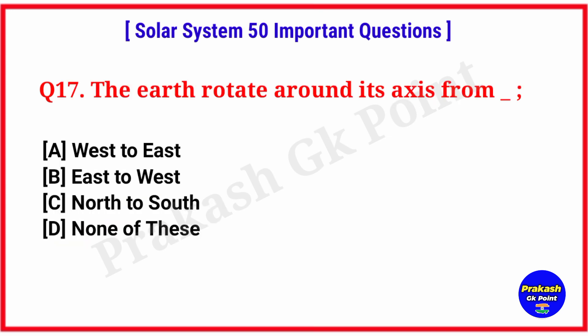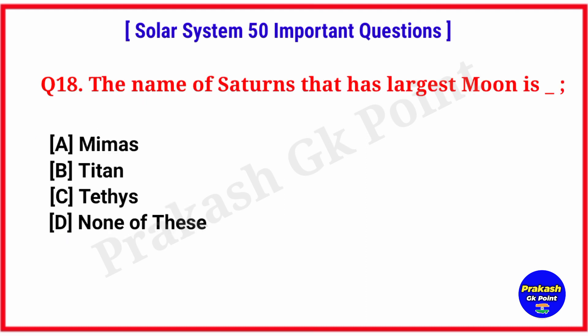The Earth rotates around its axis from? Answer: option A, West to East. The name of Saturn's largest moon is? Answer: option B, Titan.